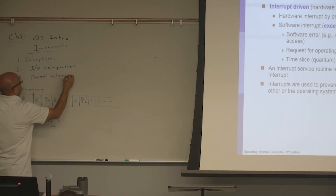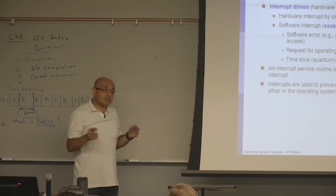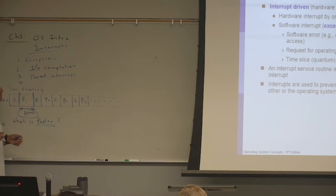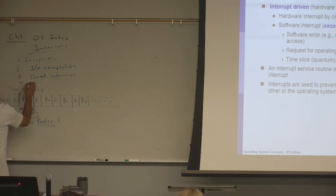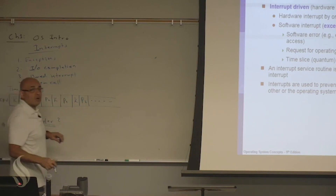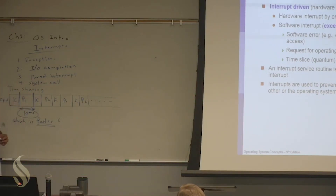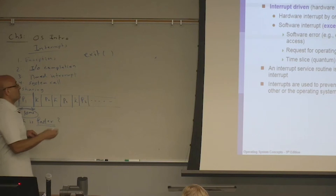The fourth type is a system call. System calls can be made for many different reasons, including the normal termination of a process. When a process is done, it performs a system call like 'exit' — just telling the operating system 'I'm done.' So the four interrupt types are: exceptions, I/O completion, timed interrupt, and system call.